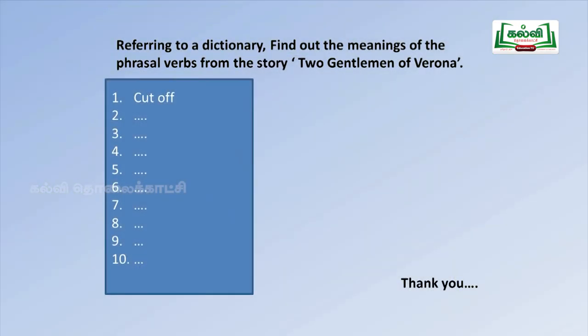Towards the end, here is your homework: refer to a dictionary and find out the meanings of phrasal verbs from the first story, 'Two Gentlemen of Verona.' I have selected 'cut off,' which appears in the first page of that prose section. Find at least ten phrasal verbs from the first lesson. For better understanding, you can also read about phrasal verbs from page number 118. Develop your vocabulary — as it increases, you will have good communication in both writing and speaking. Thank you very much for listening to this vocabulary section video for the first unit textual exercises.